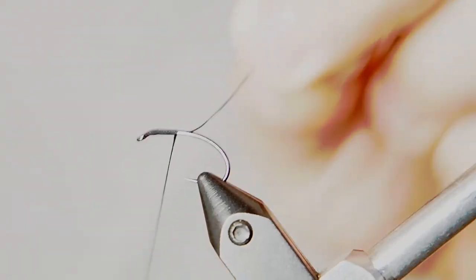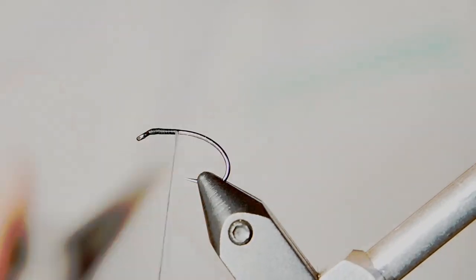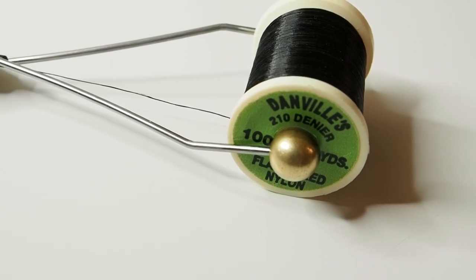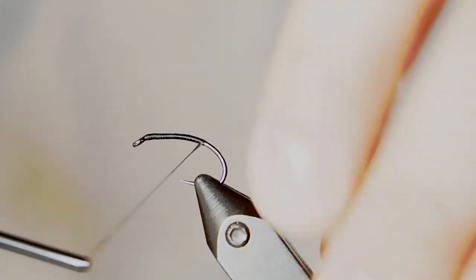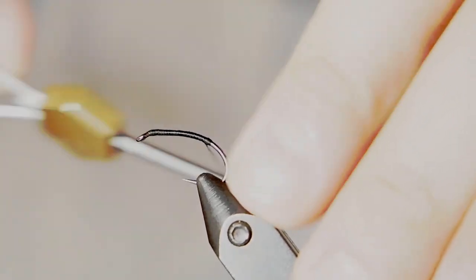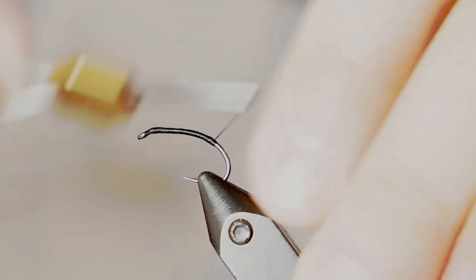We're going to start with the trailer hook first. This is the size 10 curved hook. I'm using flat wax nylon in black, and I'm just going to dress the hook, but I am going to go down well past the curve. You can see that here. At the end, I'm going to build a little bit of a ball. This is important.